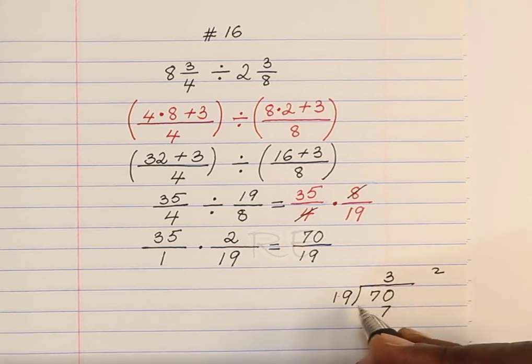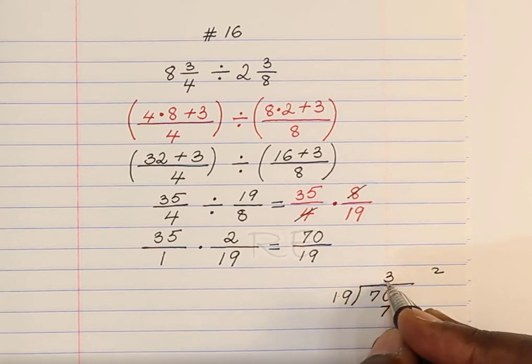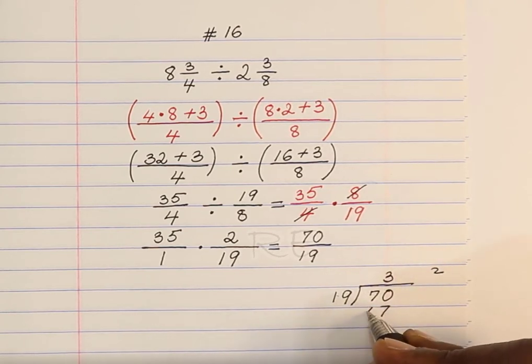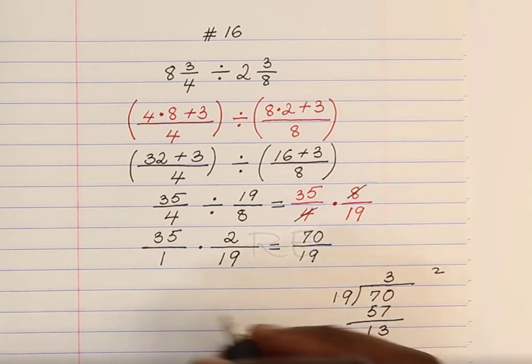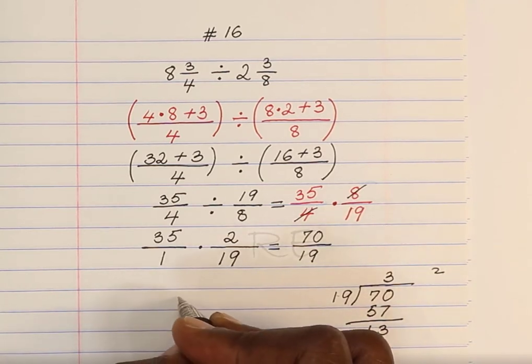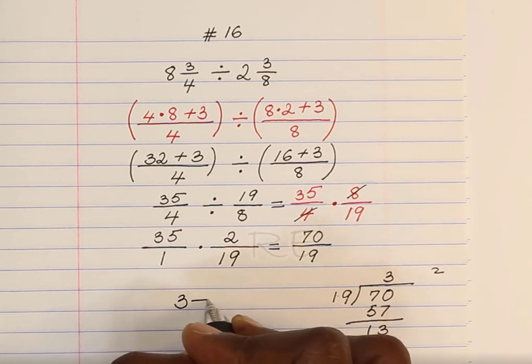3 times 9, 27. 3 times 1, 3 plus 2, 5. And 70 minus 57, we get 13.